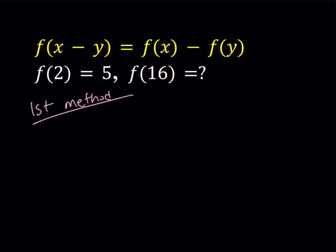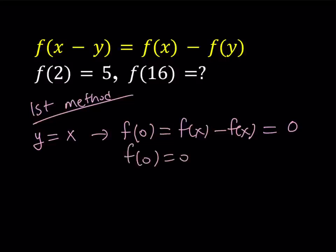I'm going to set y equals x everywhere. If you set y equals x or replace y with x, you're going to get f of 0 on the left-hand side. On the right-hand side, you're going to get something real nice: f of x minus f of x. And f of x minus f of x is always 0. Therefore, we get that f of 0 is equal to 0. Could you get this in a different way? You could replace x and y both with 0. That would also give you f of 0 equals 0.